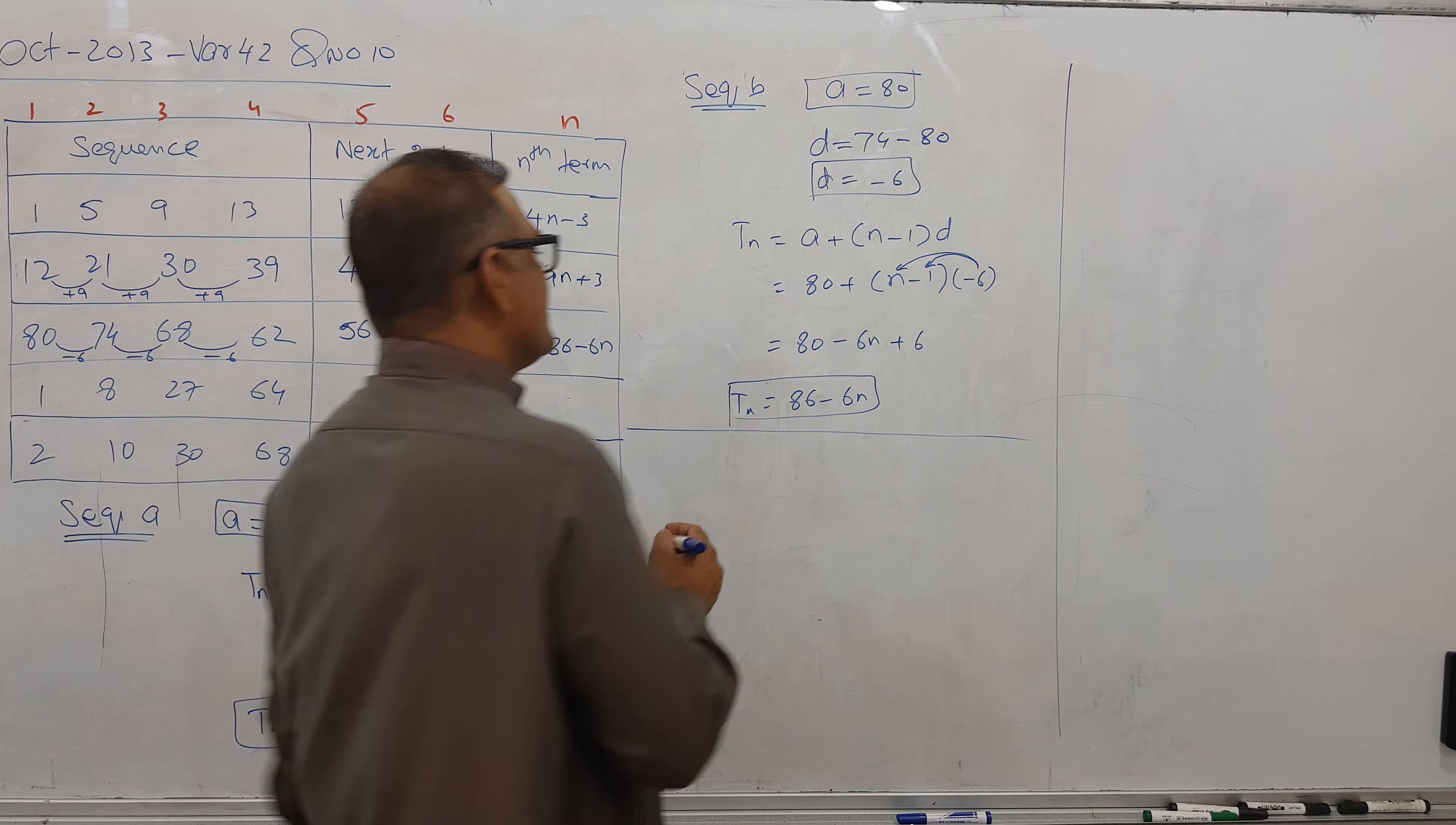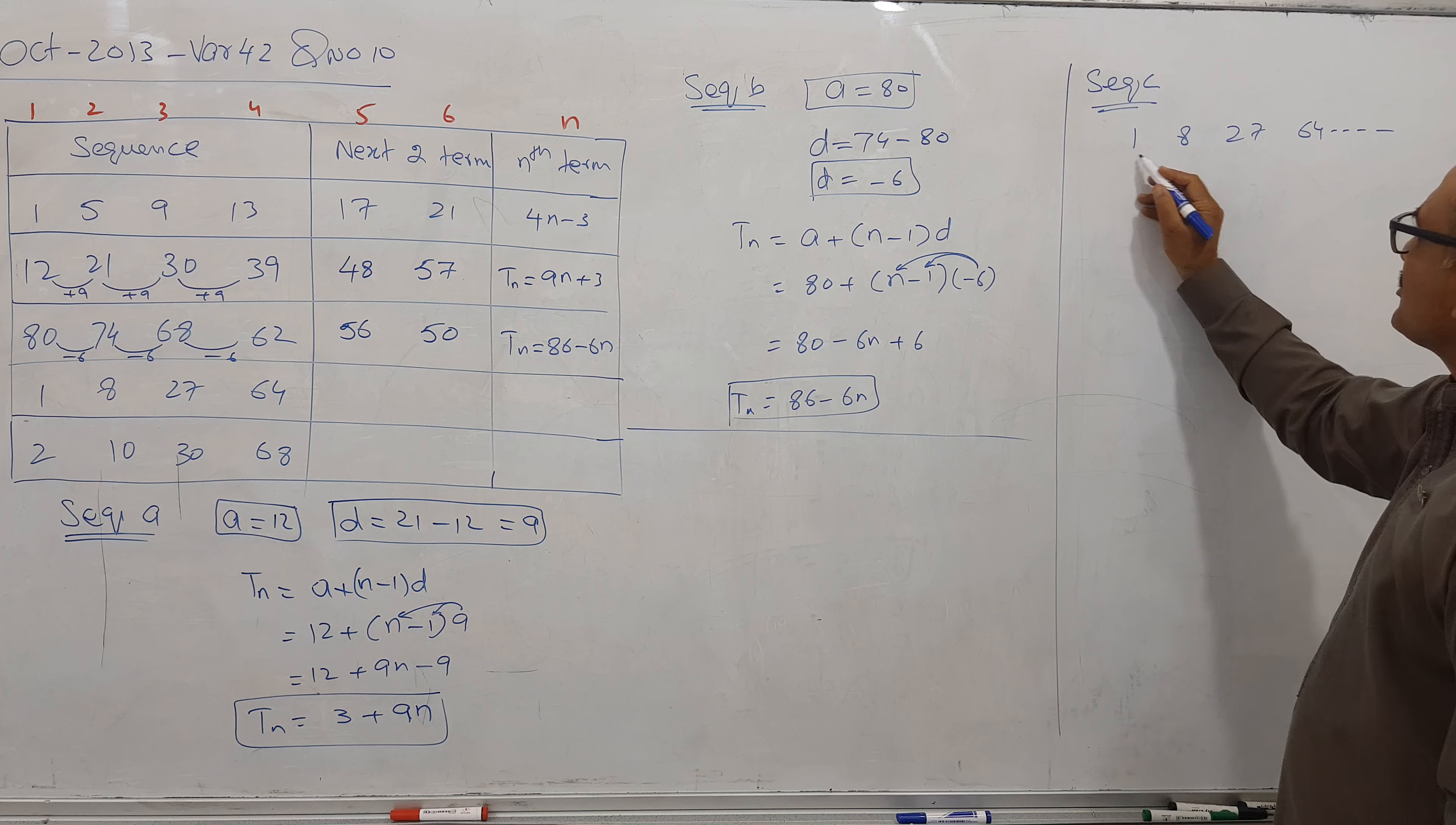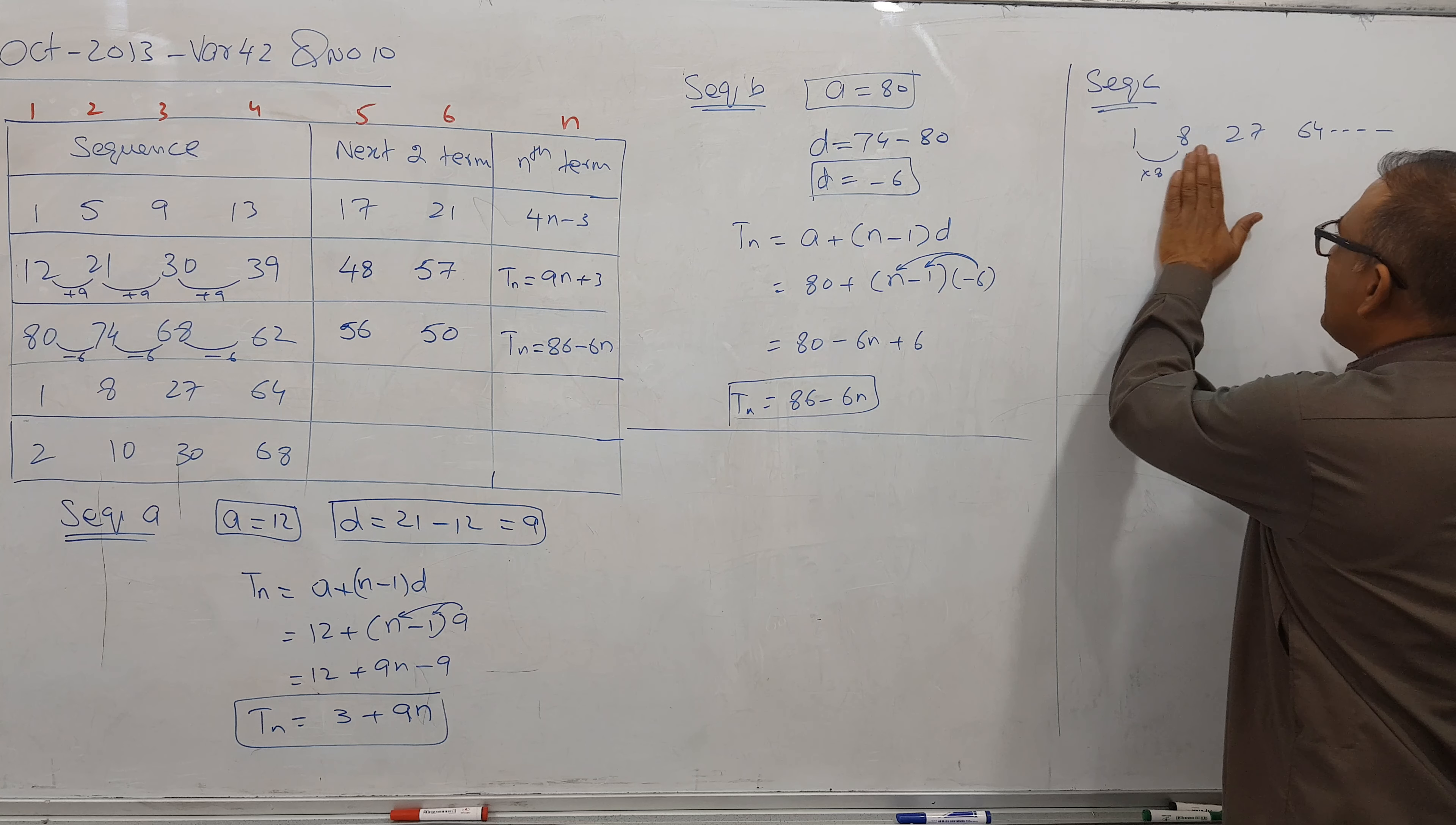Now two sequences over, two left. Let's talk about this sequence C. Sequence C: 1, 8, 27, 64 continue. 8 minus 1, this is plus 7, but this is plus 20, so it's no AP. Let's go for GP. So this is times 8, but this not times. So it means no AP, no GP.